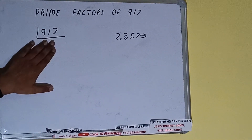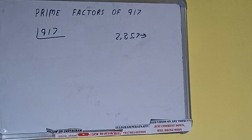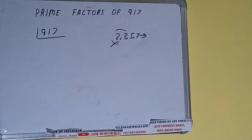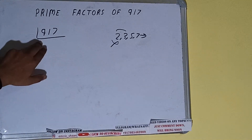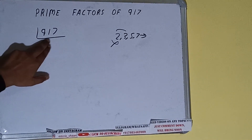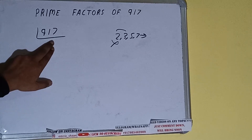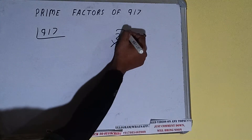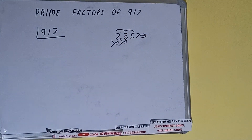We'll check with the lowest prime number, which is 2. Is 917 divisible by 2? No, it is not, because the number is odd. We'll check with the next lowest prime number, 3. The digit sum of 917 gives a remainder — it is not divisible by 3. Let's check with 5: the last digit is neither 5 nor 0, so it is not divisible by 5 either.